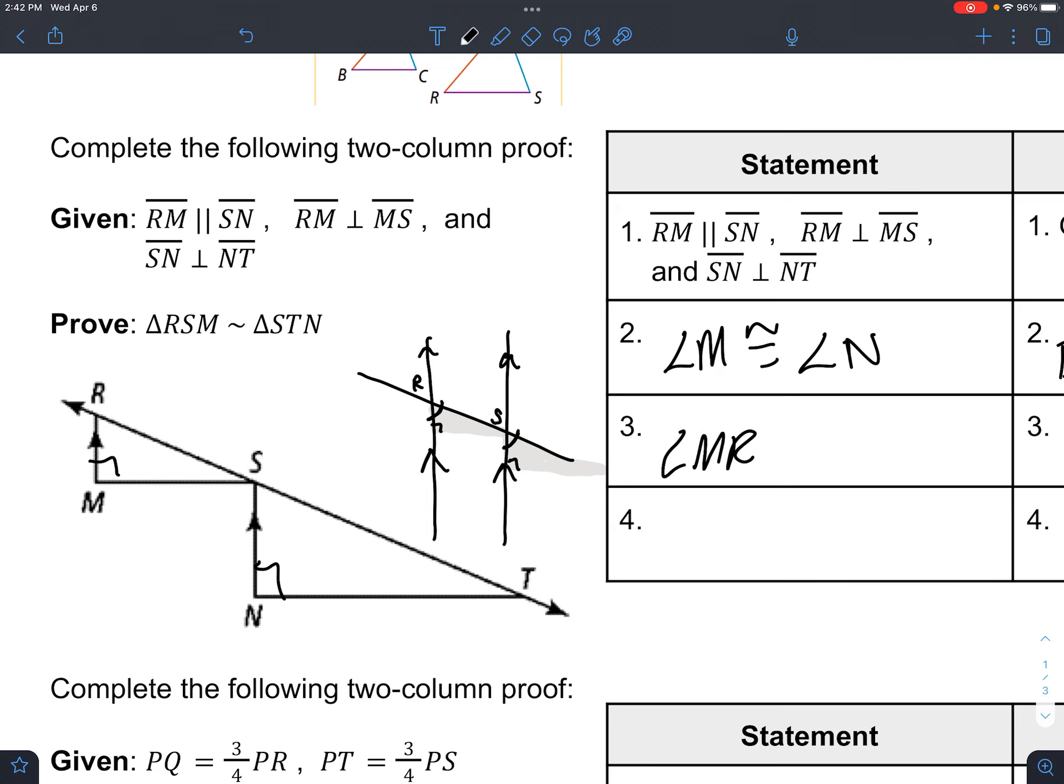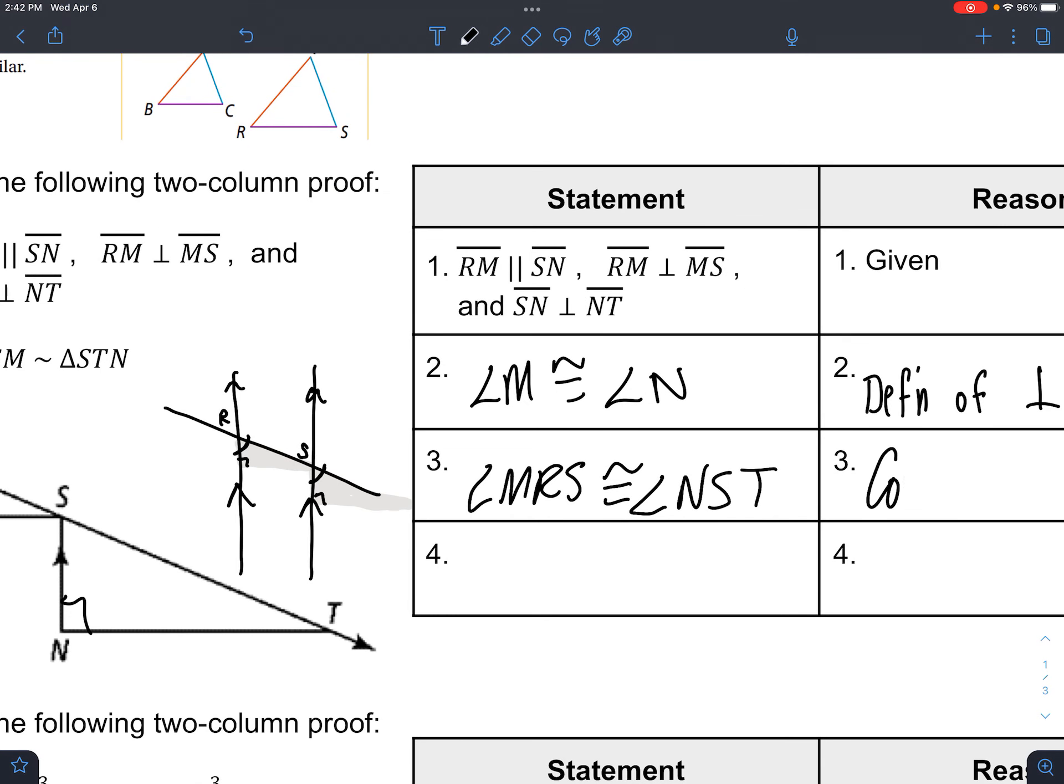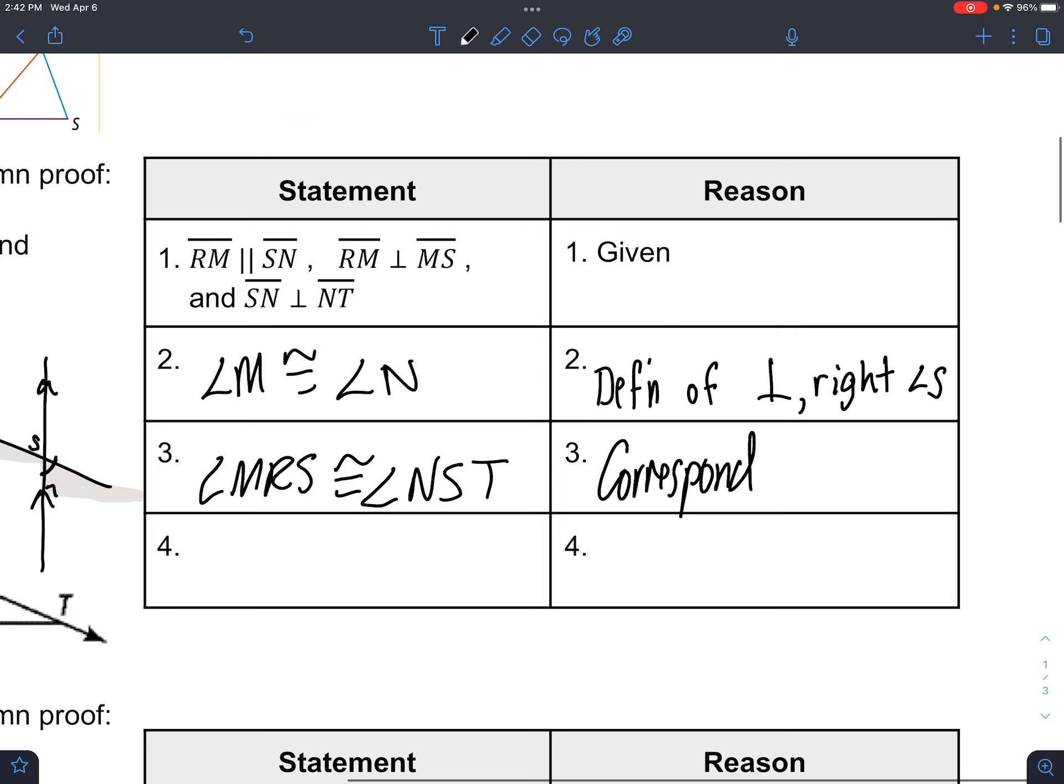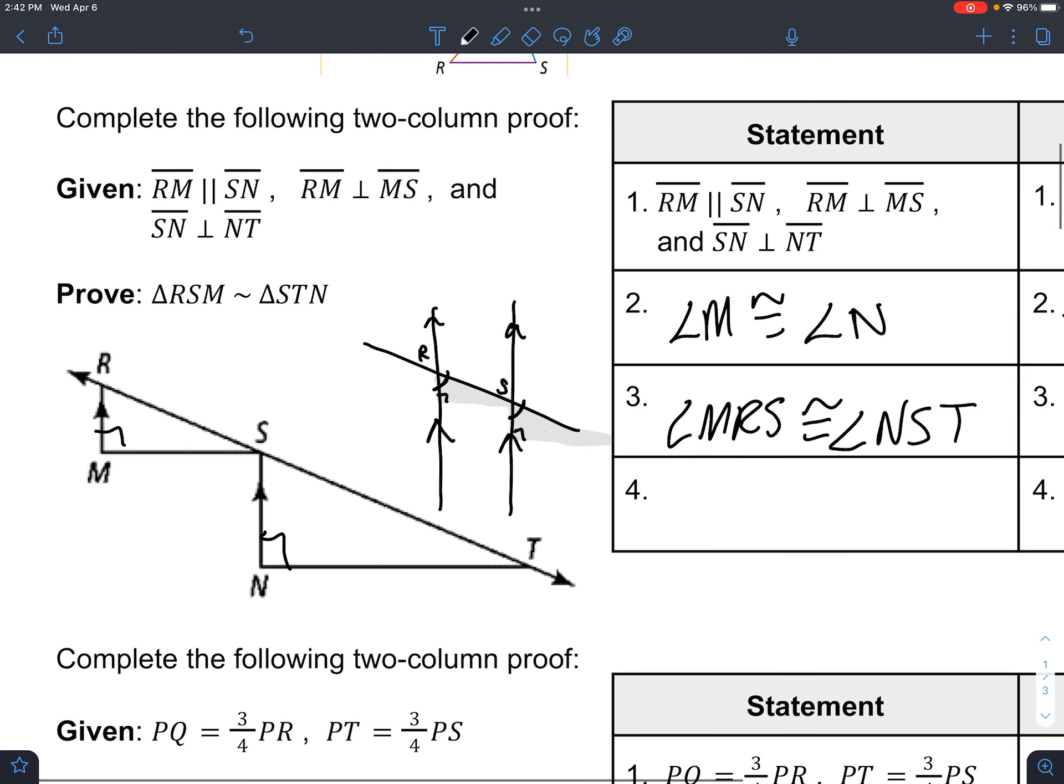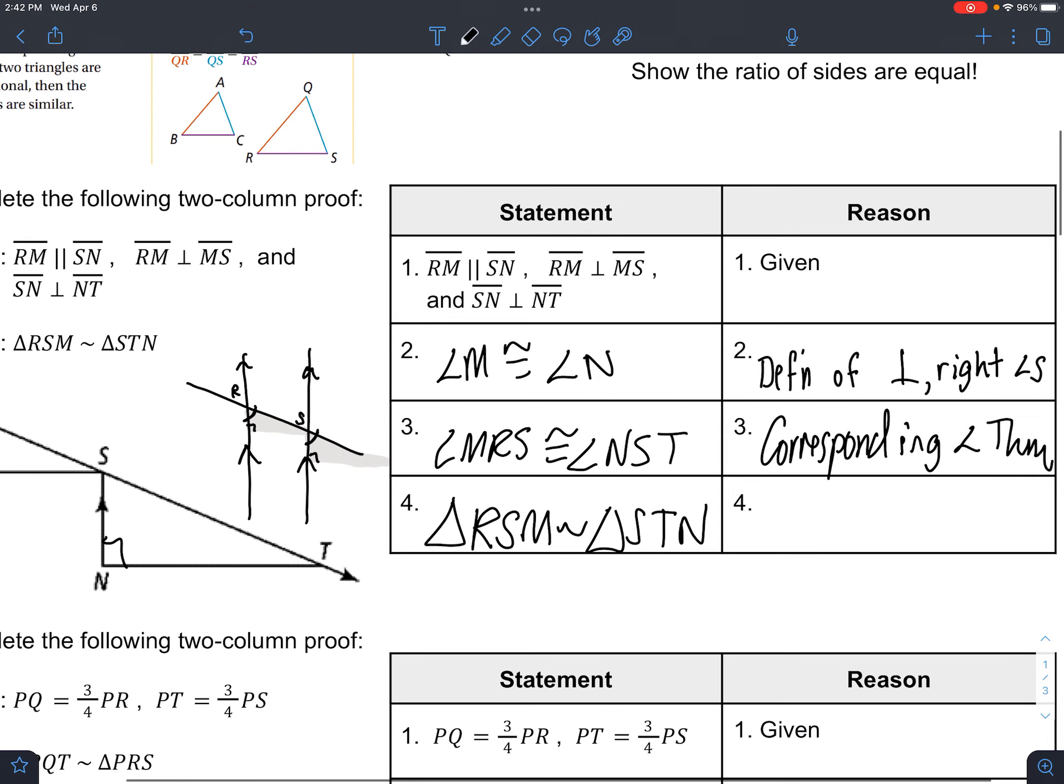So angle MRS is congruent to angle NST. Why? The corresponding angle theorem—should ring a bell deep in your brain somewhere. And once we get to the bottom of the proof, we write down what we are seeking to prove, and the reason is because we got two angles to match.